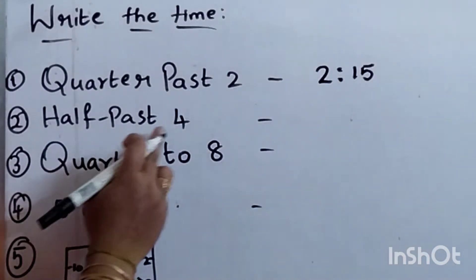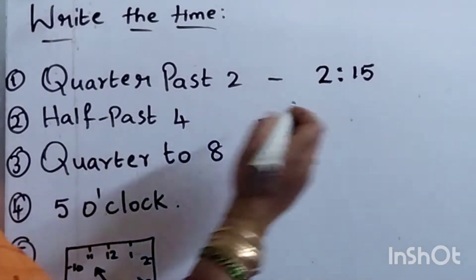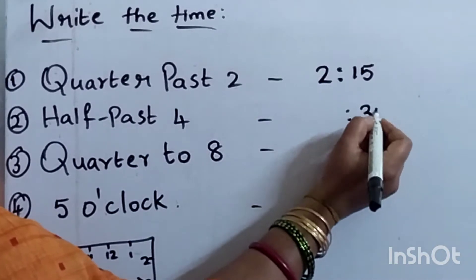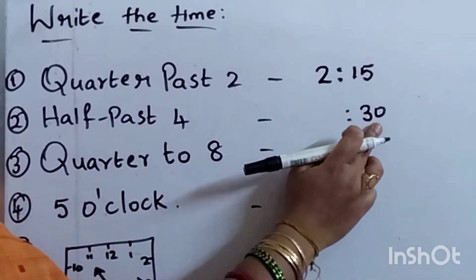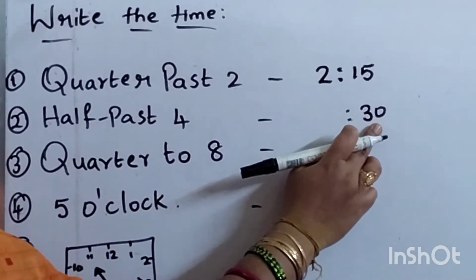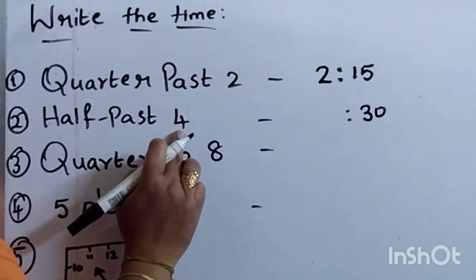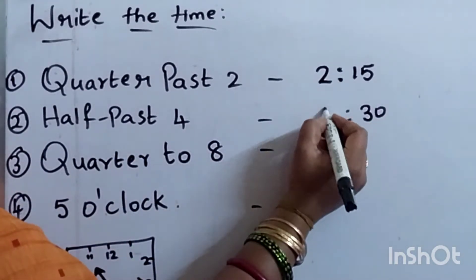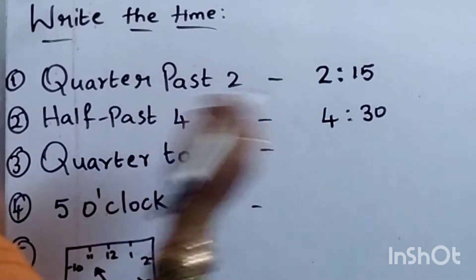Half past 4. Half past means 30 minutes, long hand at 6. So write 30 in the minutes place. The hour is 4. So write 4 here — the time is 4:30.